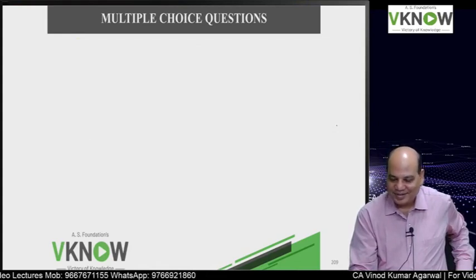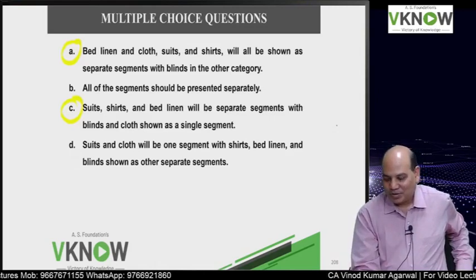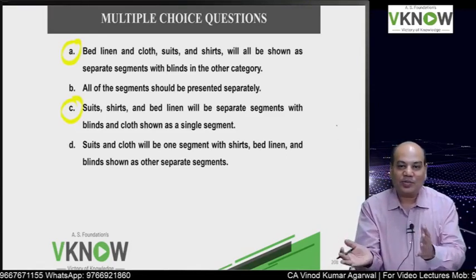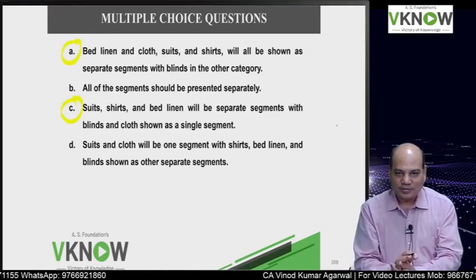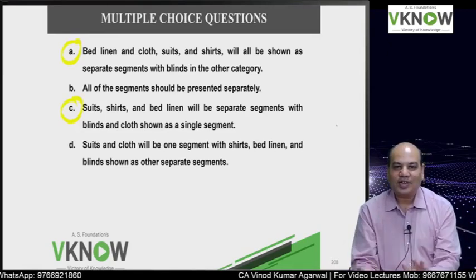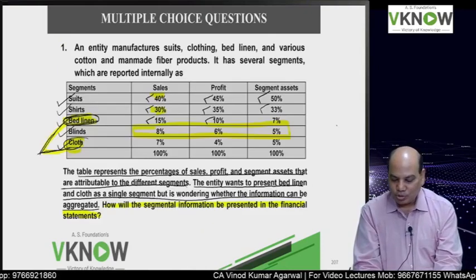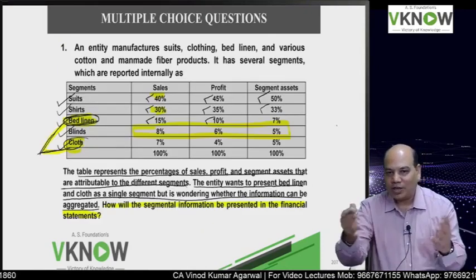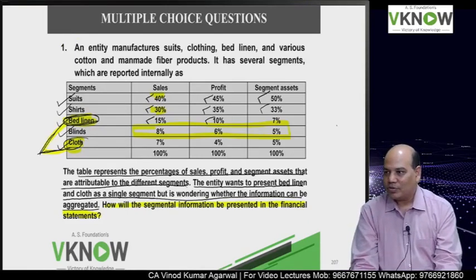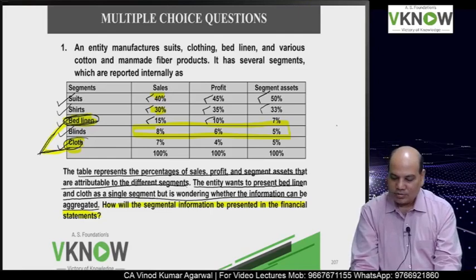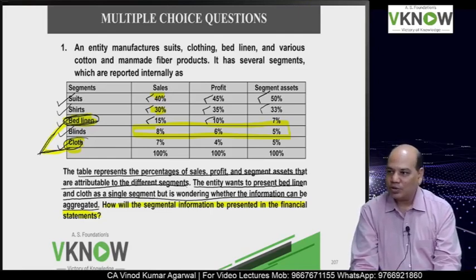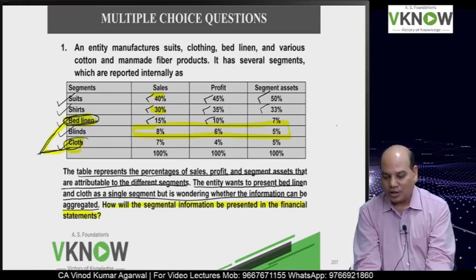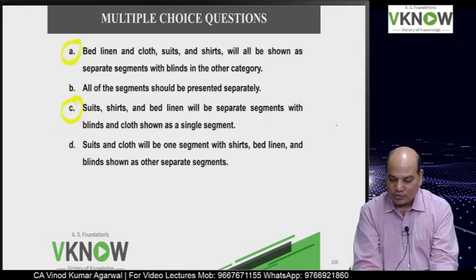As discussed earlier, a company can aggregate segments which are similar in economic characteristics and where the majority of aggregation criteria are the same. Cloth and bad linen are not very different products from each other. So if management wants, they can aggregate cloth with bad linen. It can be done because they have similar economic characteristics and share aggregation criteria. The answer is A.